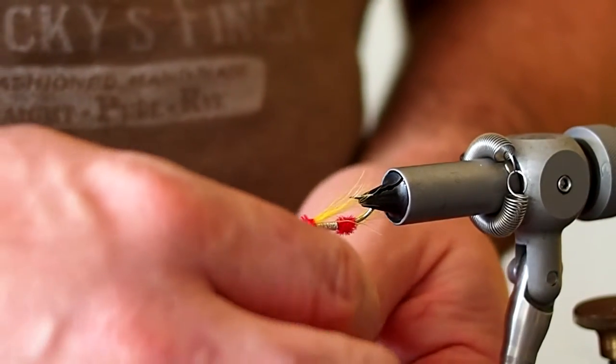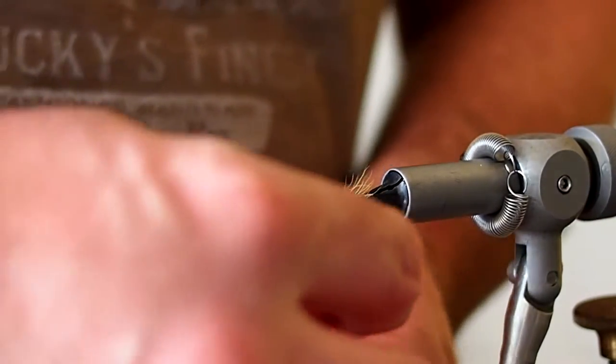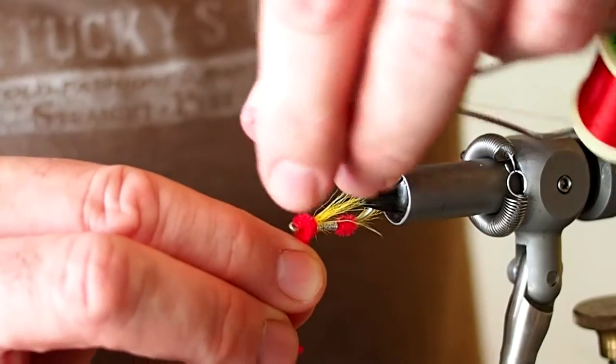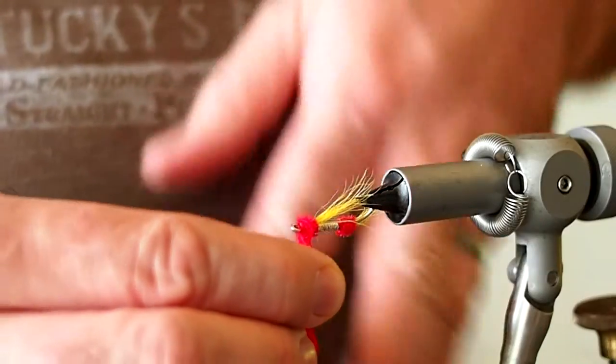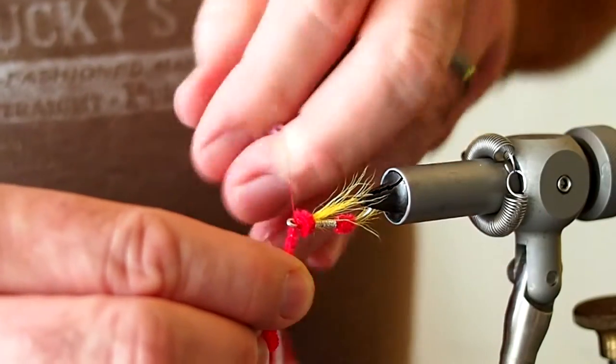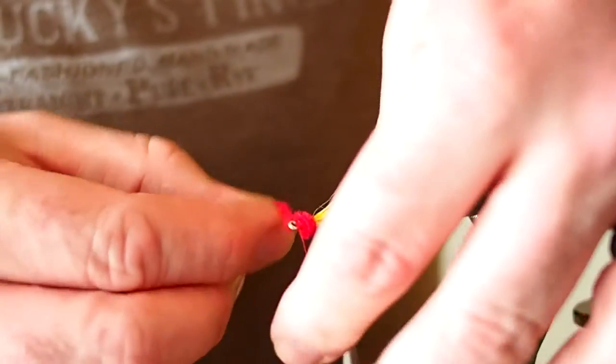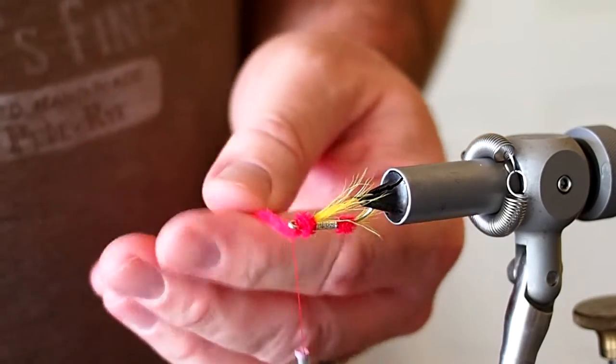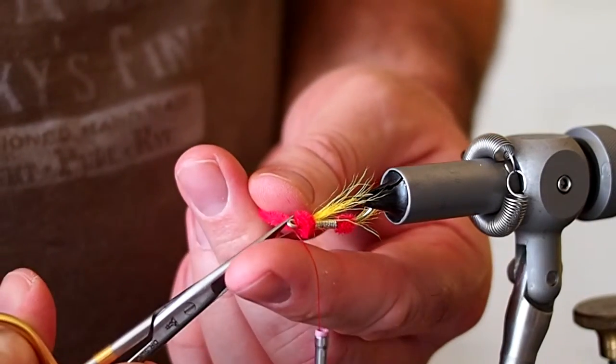We'll make a turn or two of chenille and capture that with our thread. Snip away your excess chenille.